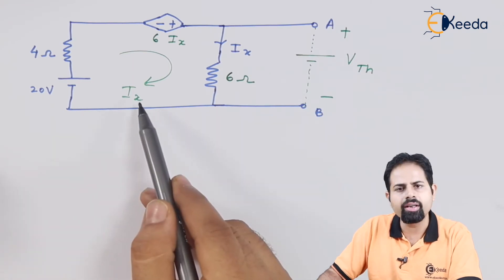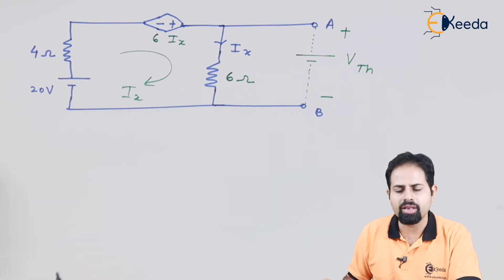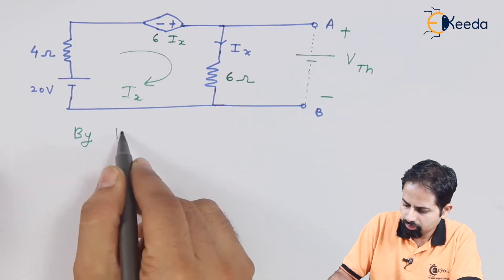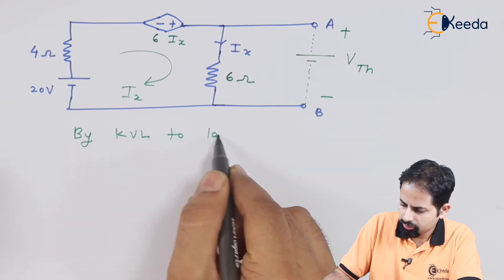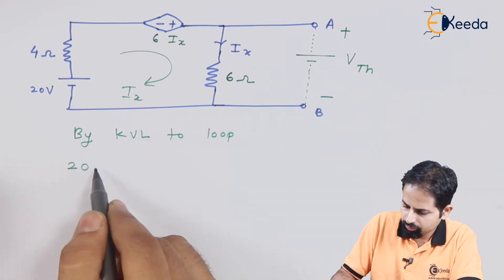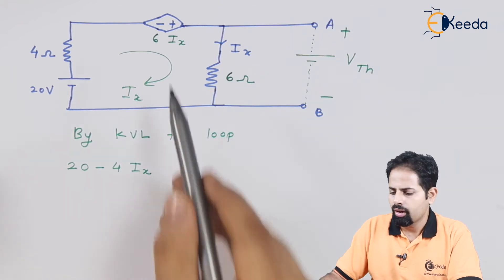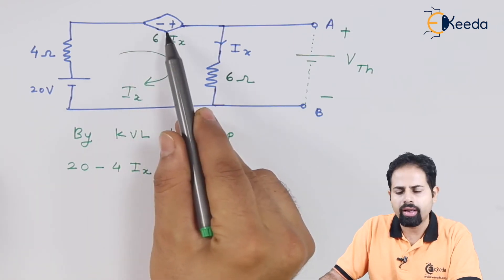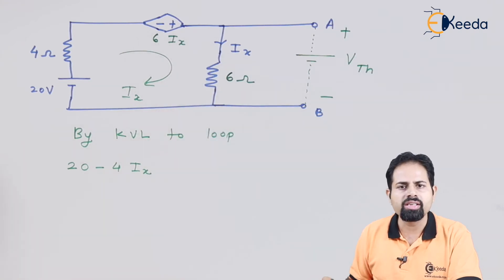So to find this current Ix, we can apply KVL to this circuit through this loop. Now this voltage source is negative and positive. So we are moving from negative to positive terminal, so it is considered as positive.